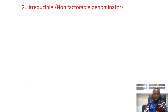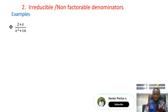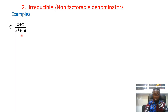Our second type is irreducible or non-factorable denominators. As the name says, the denominator cannot be factorized or reduced. Going back to polynomials, this relates to complex or imaginary roots under the discriminant. The first example has denominator s² + 16, which cannot be reduced.